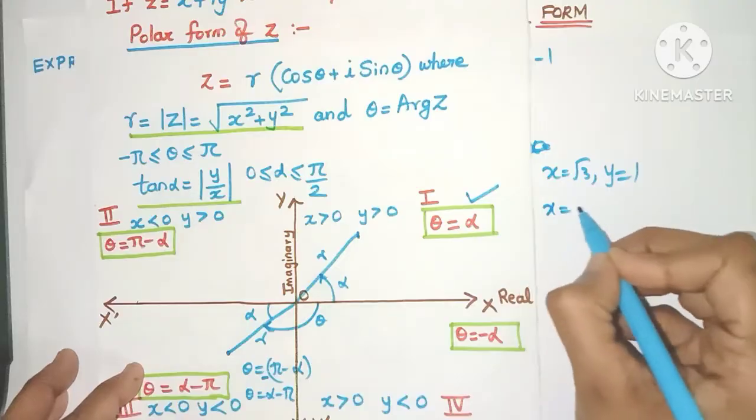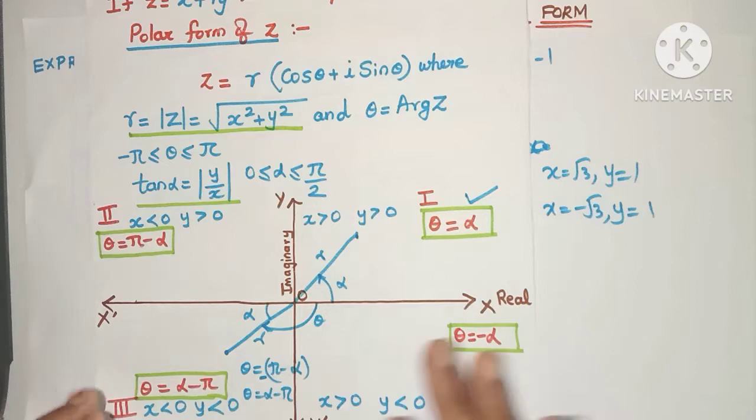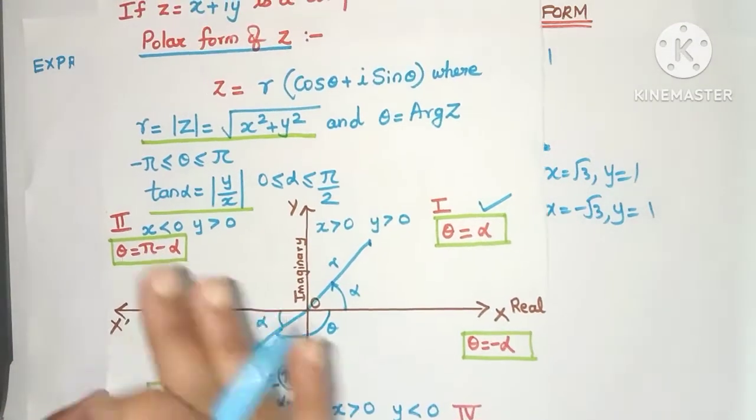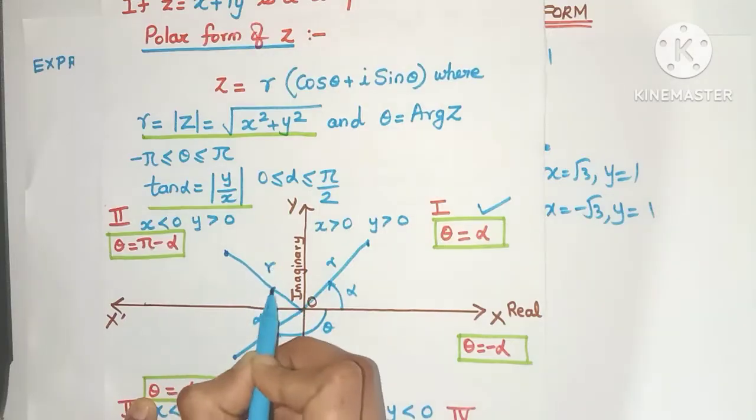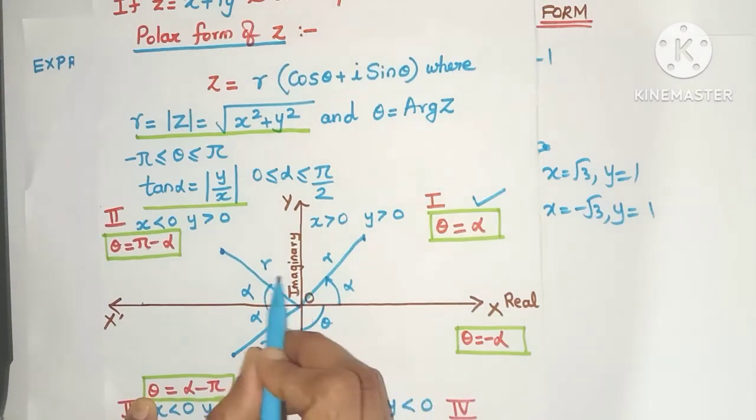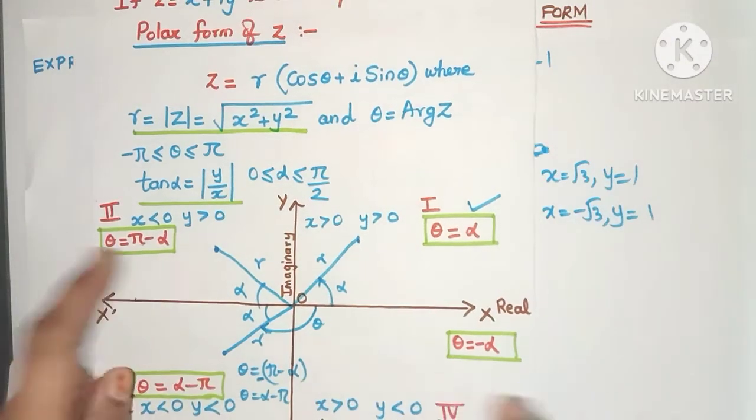What about when x is -√3 and y is 1. Which quadrant will it lie? Yes it will lie in the second quadrant over here maybe and this will be my r. This will be my alpha. So my theta here will be this angle. See it will be π - α. So remember this also.